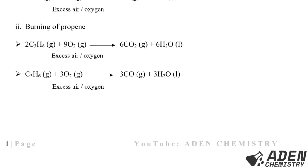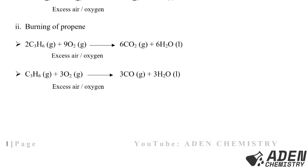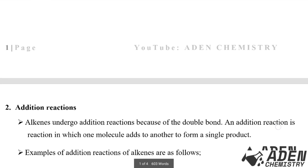Burning of propene: propene reacts with 9 moles of oxygen gas to get 6 moles of carbon dioxide and 6 moles of water — that is with excess air or excess oxygen. When propene reacts with a limited supply of oxygen, we get 3 moles of carbon monoxide gas and 3 moles of water. That is the first chemical property of alkenes — combustion.